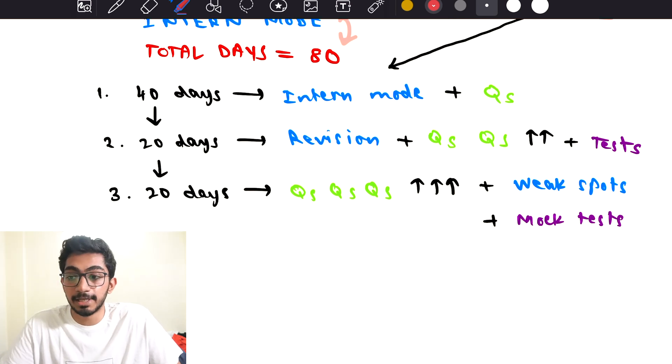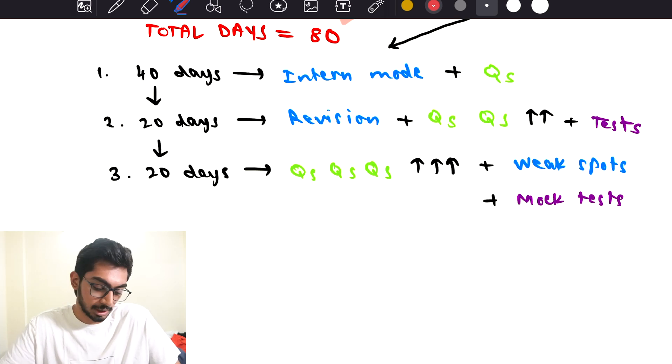Then in the next 20 days I would do another quick revision along with question solving, again in all subjects mode and learning from the questions rather than using it as a tool to assess my progress. Grand tests and mock tests are there to assess my situation. In the final 20 days I would keep solving questions more and more, focus mainly on questions and weak topics, and just try to revise anything possible.